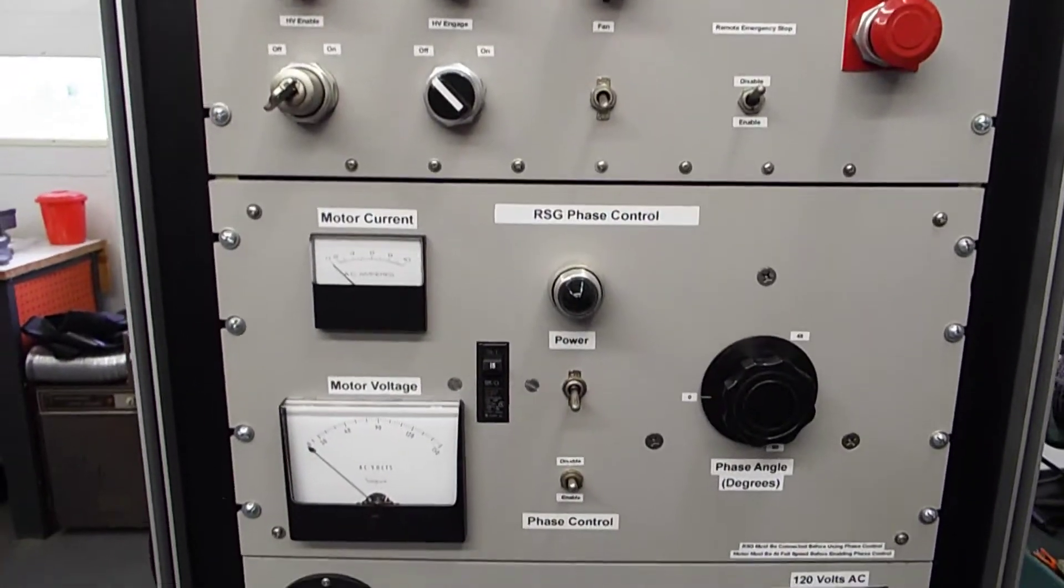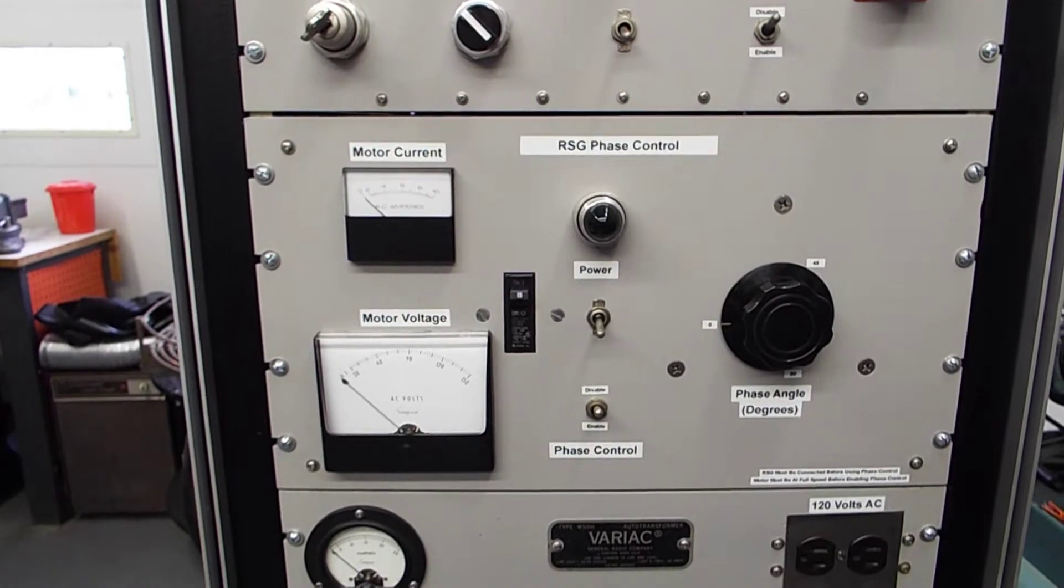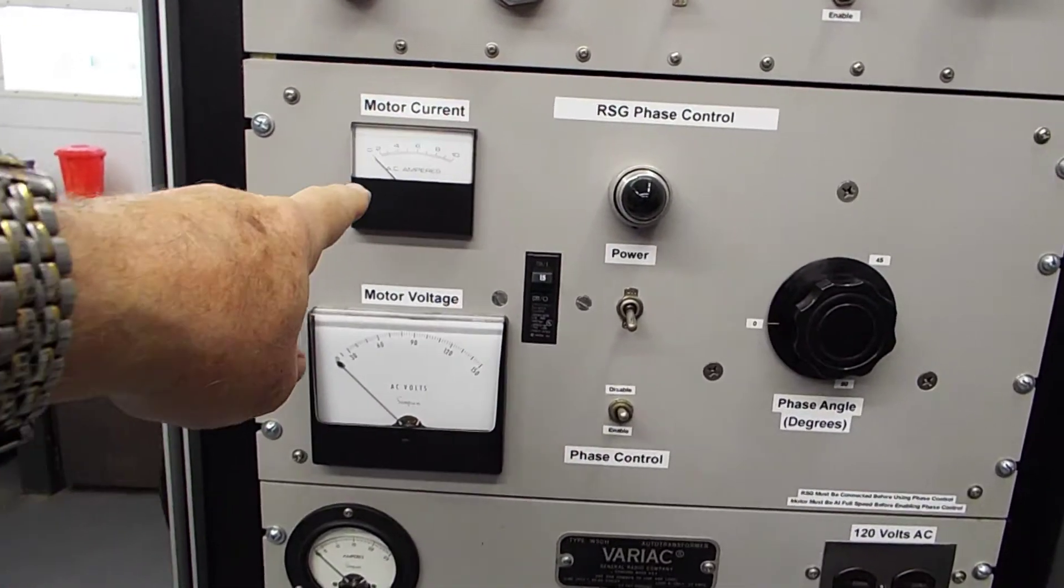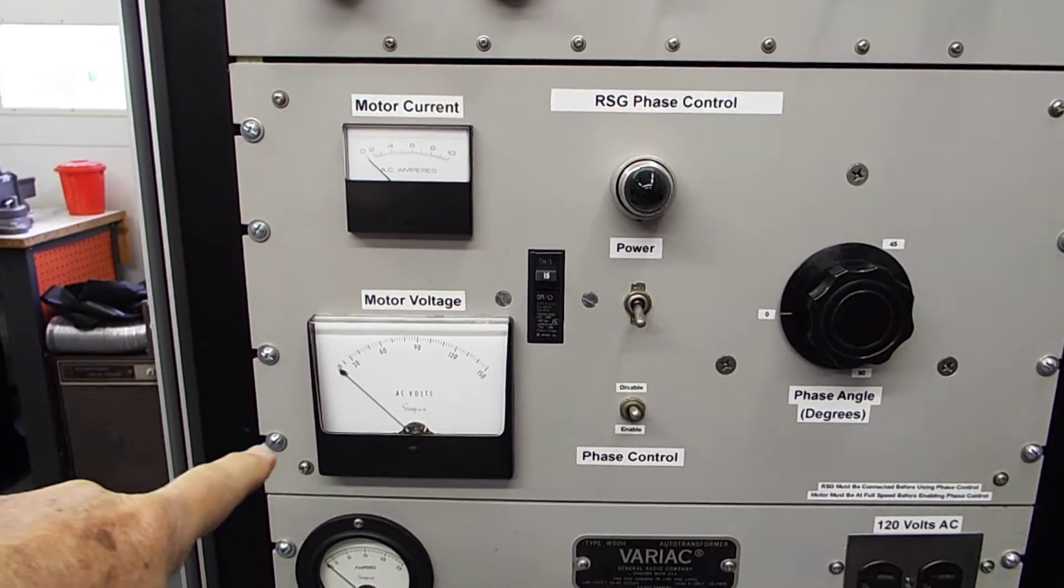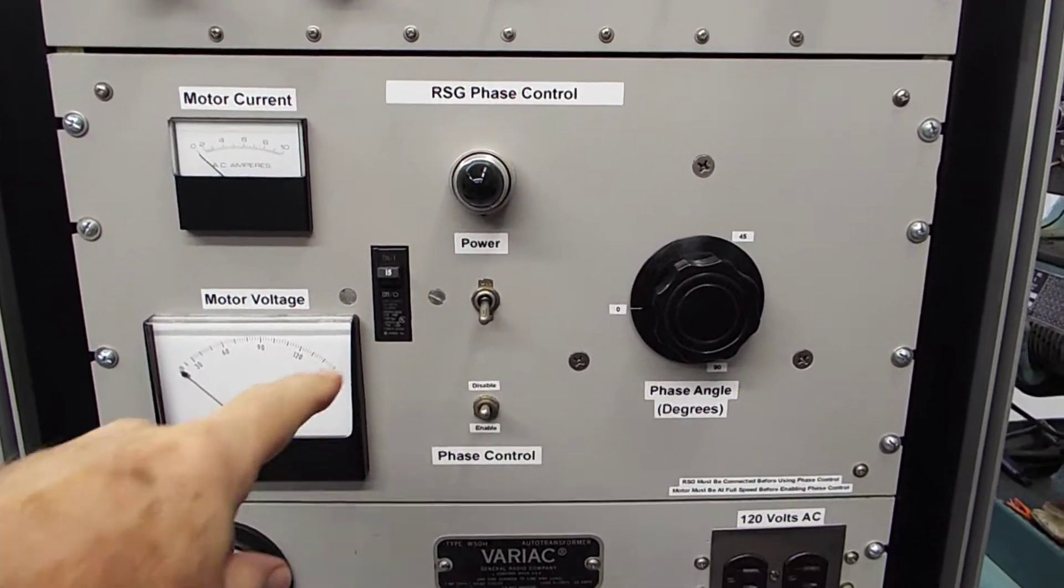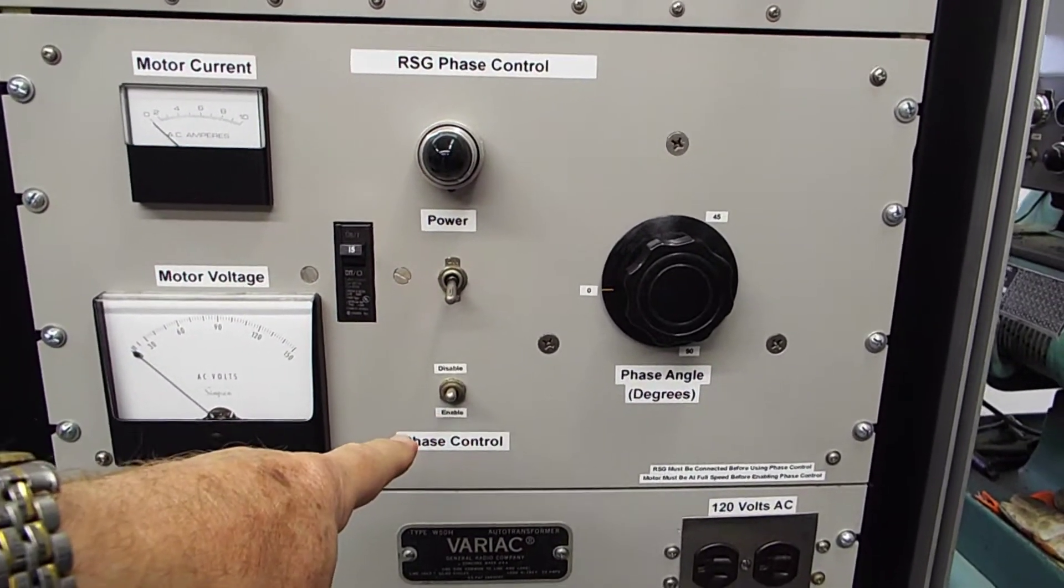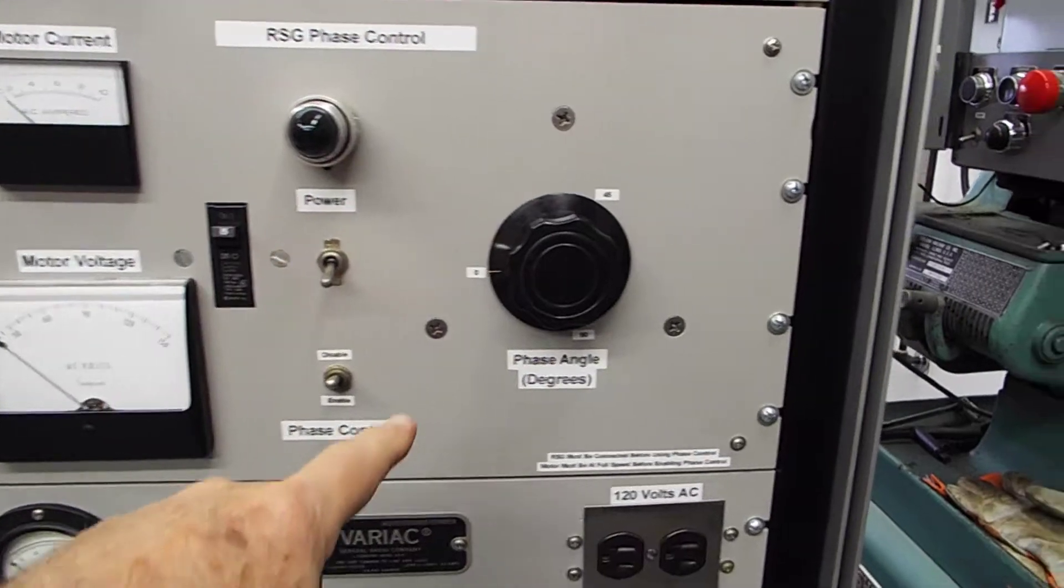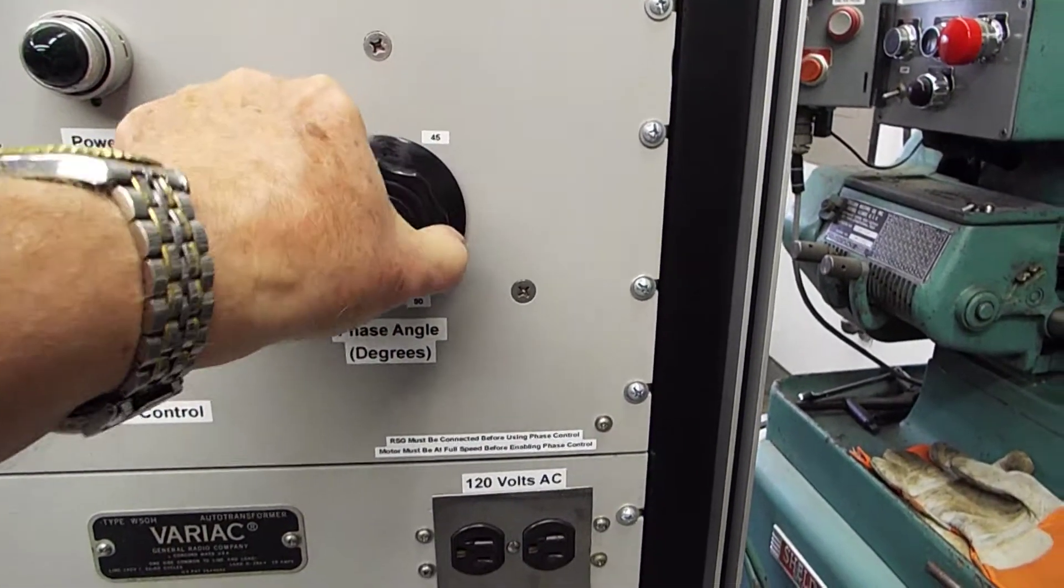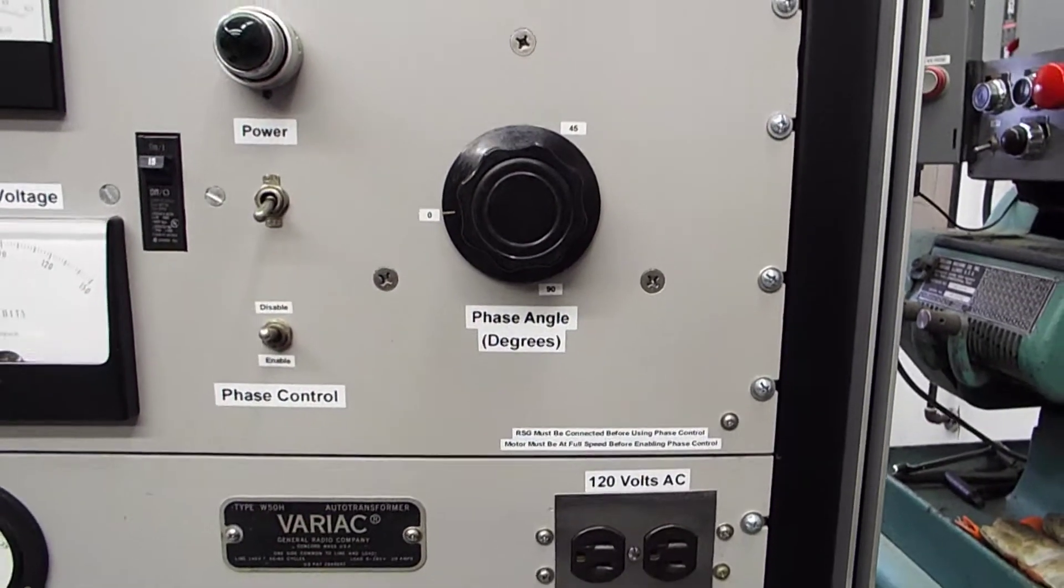And then moving down, this is the phase control for the rotary spark gap. This is the motor current right here. The motor voltage. And obviously power on and off. I can enable or disable the phase control. And I adjust the phase angle with this variac right here from 0 to 90 degrees.